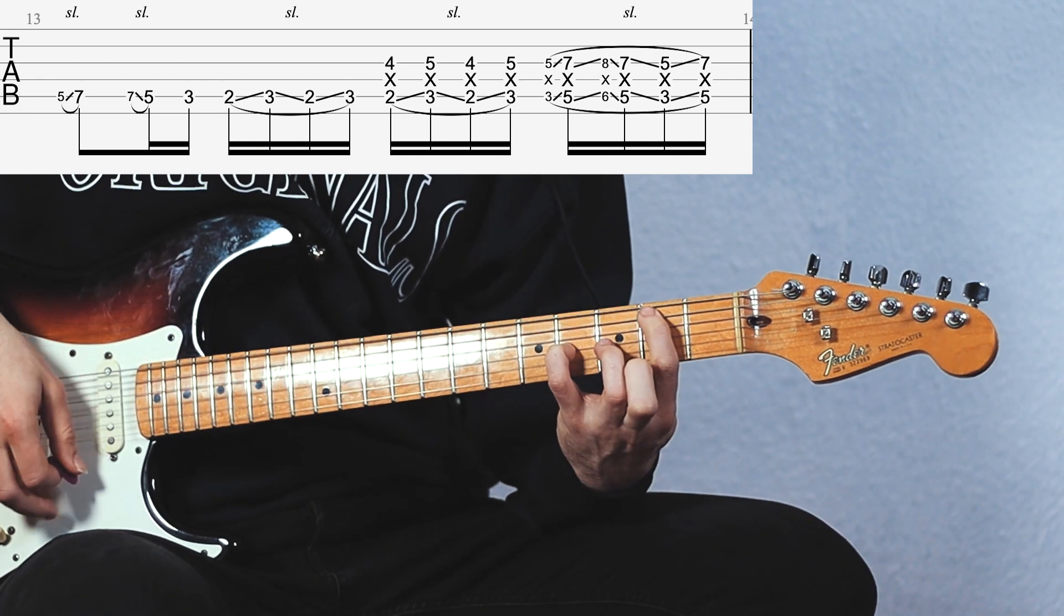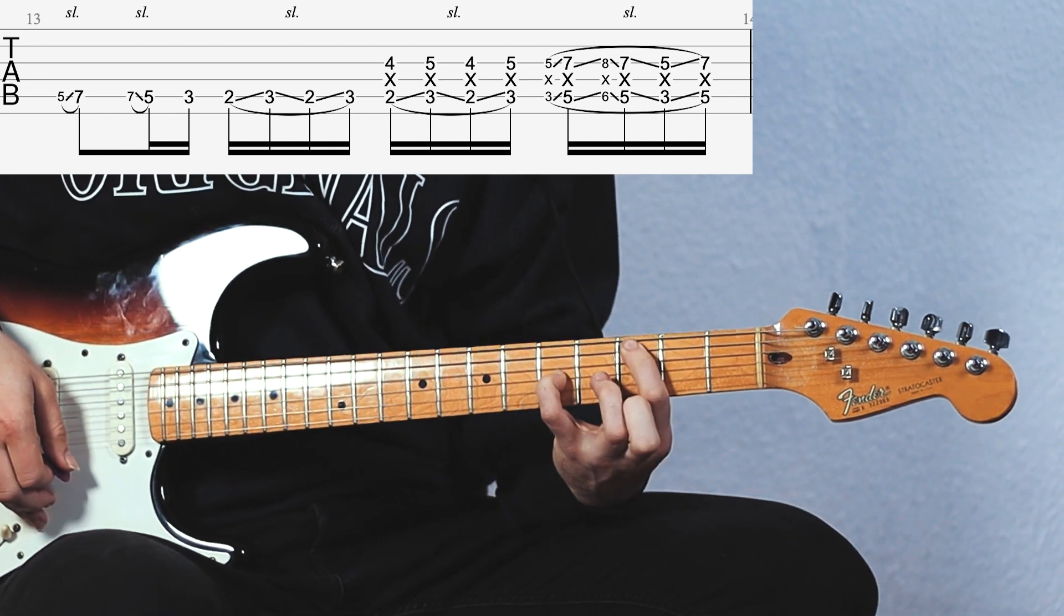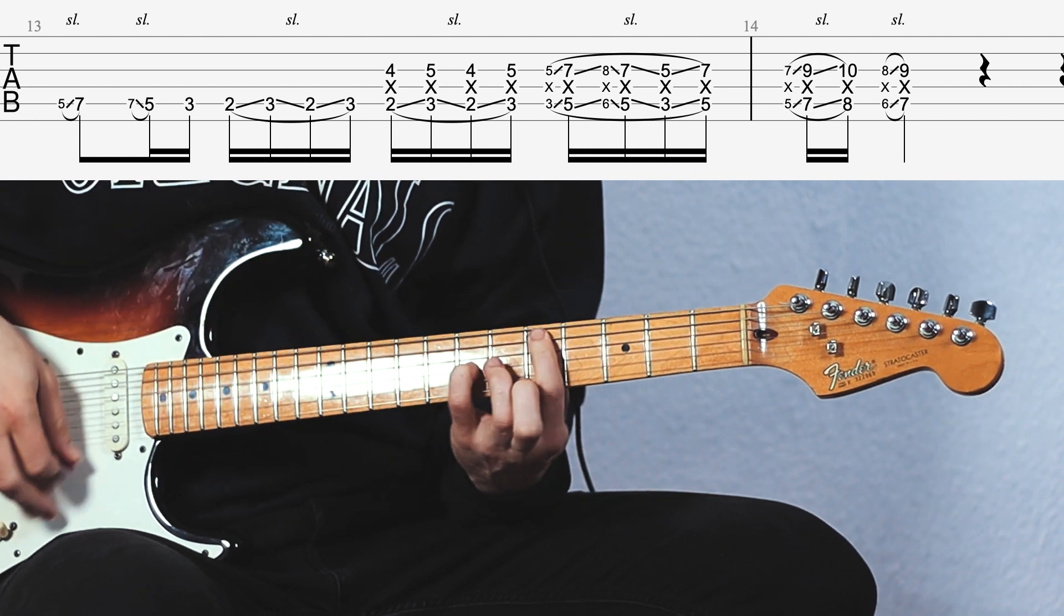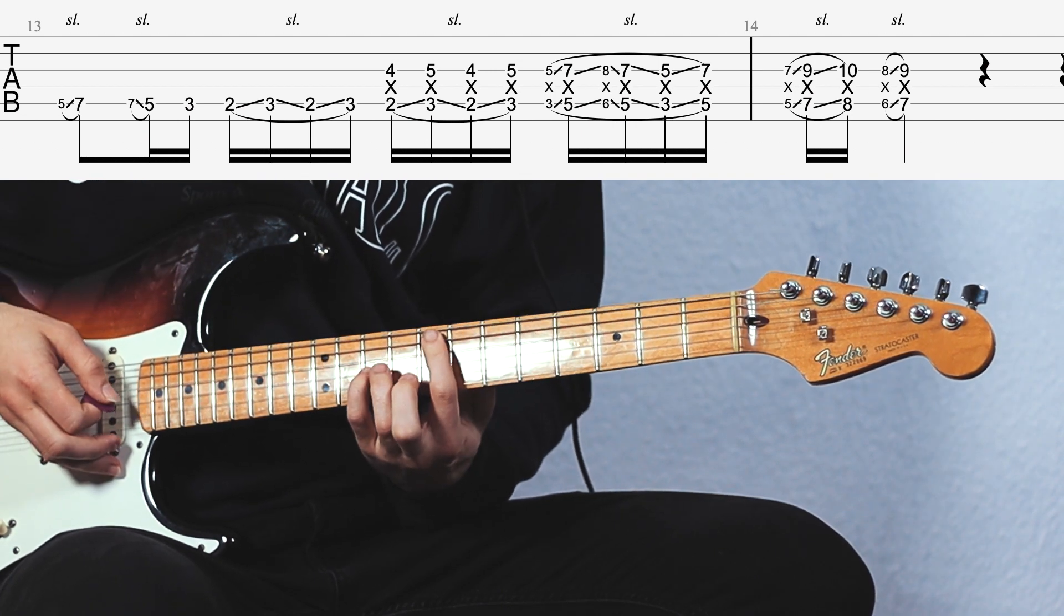Kind of like this. Then we slide onto the 7th fret, here on the A string, then the 8th fret.